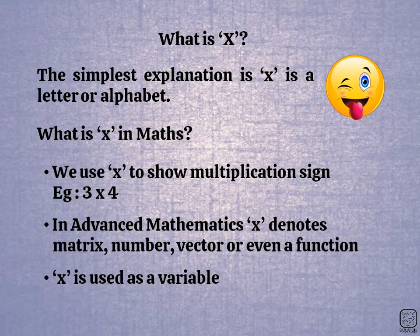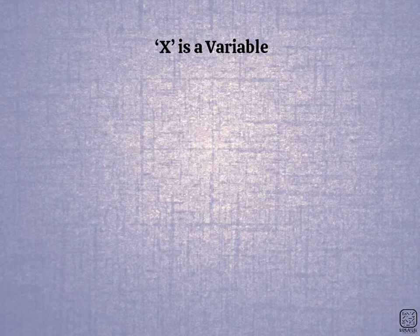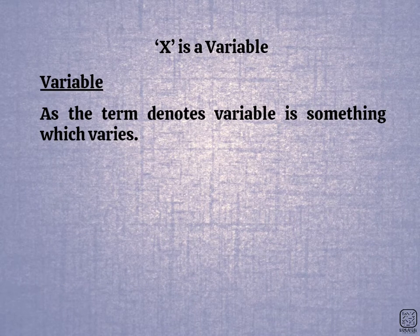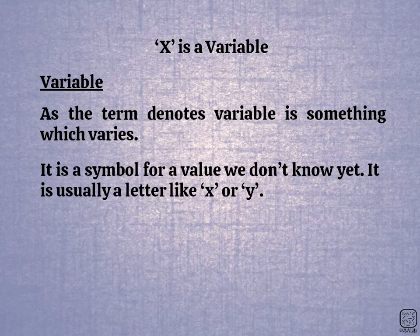x is used as a variable. What is a variable? If we are using the name, a variable is something which varies. What is a variable? It is a symbol for a value we don't know yet. We have a variable — it is not a fixed value.